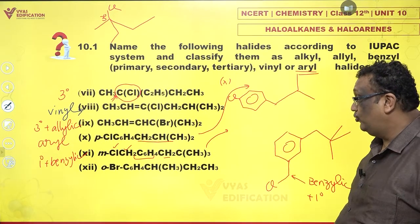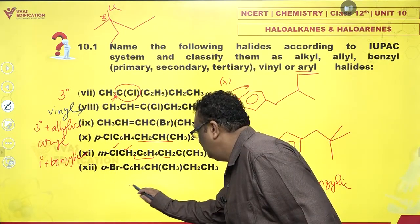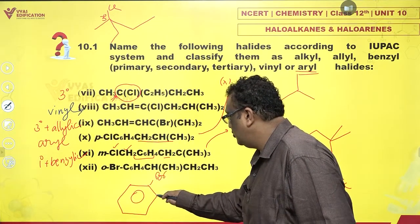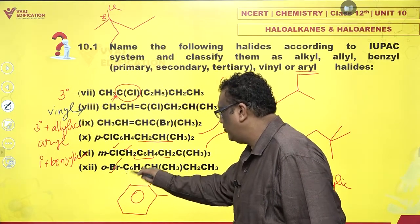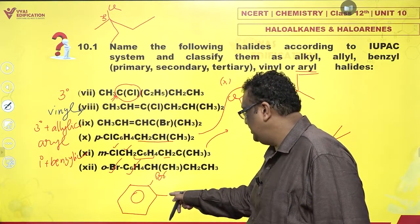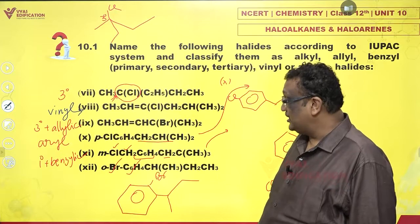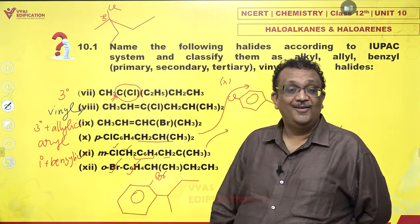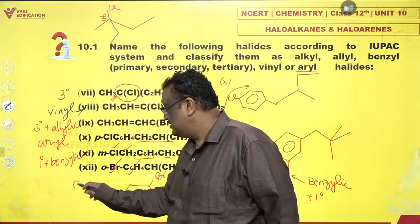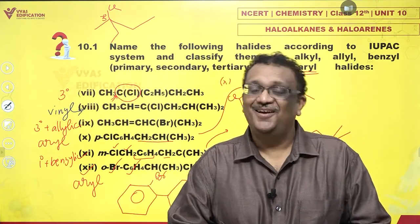The last one: ortho-bromo-C6H4-CH(CH2-CH3). Drawing a benzene ring with Br on the ortho position — this Br is directly attached to the benzene ring. In such cases we don't say primary, secondary or tertiary. We simply say this is an aryl halide. So the twelfth compound is an aryl halide.